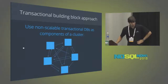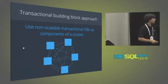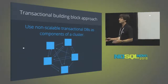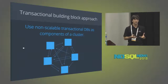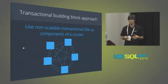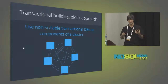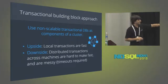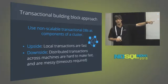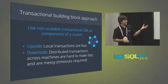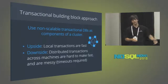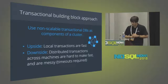The second approach is the transactional building block approach: each node is a transactional database already, and we run distributed consensus algorithms so that if a transaction needs to span nodes, communication happens. The upside is that local transactions — those involving data on one machine — are fast. The downside is that transactions involving data on multiple machines are slow and tricky. You need timeouts as part of these distributed consensus algorithms in a network with failures, so it ends up being a bit of a mess.